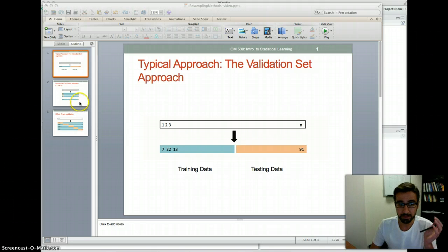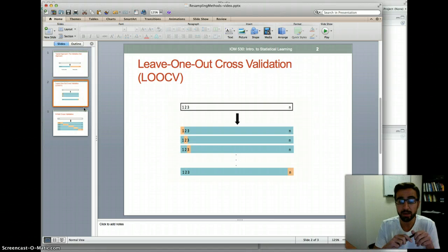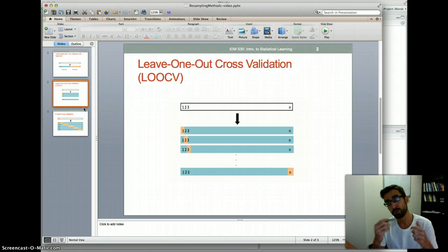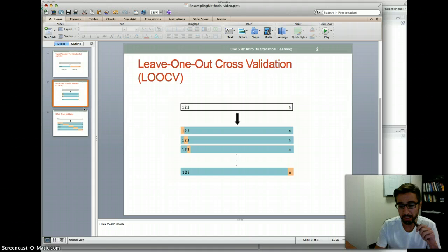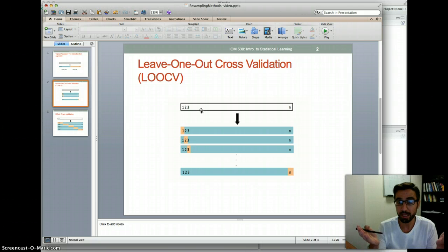We said instead of doing this we can use an approach called leave one out cross validation or LOOCV. So in this approach what we were doing is we are splitting the data set into again testing data and training data, but the testing data is going to be only one observation now and the remaining observations, which is actually n minus one observations, is going to be our training data set. This means that we almost have all of the data set as our training data, so that would be a big advantage over the previous approach.